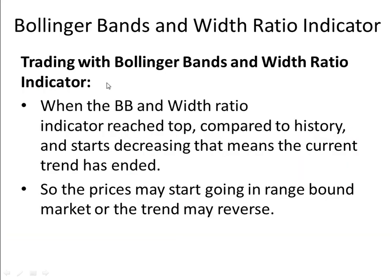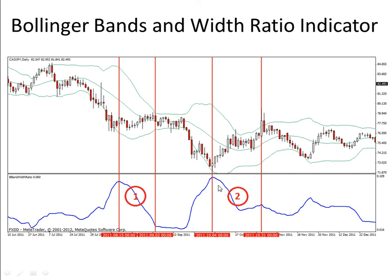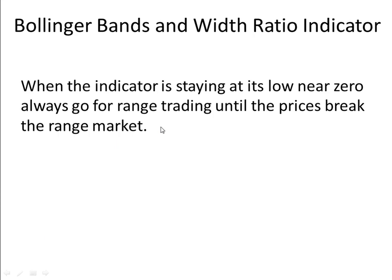When trading with the Bollinger Bands Width Ratio indicator: when the indicator reaches a top compared to history and starts decreasing, that means the current trend has ended, and prices may start going in a range-bound market or the trend may reverse. When the indicator is staying at its low near zero, always go for range trading until the price breaks out of the range market.